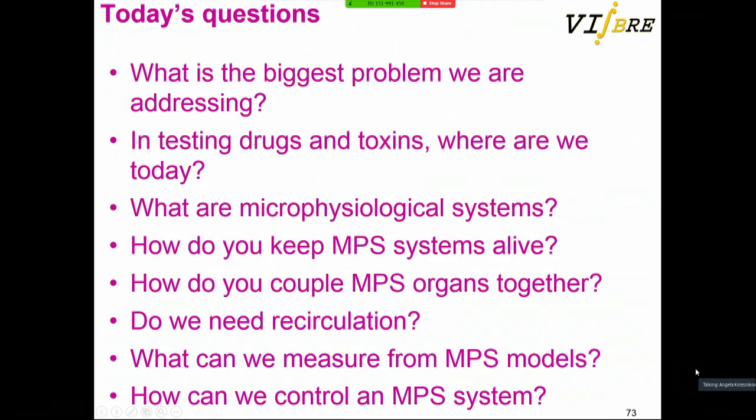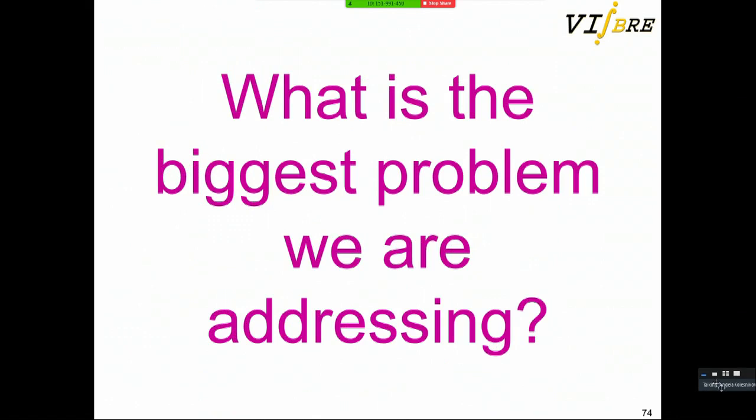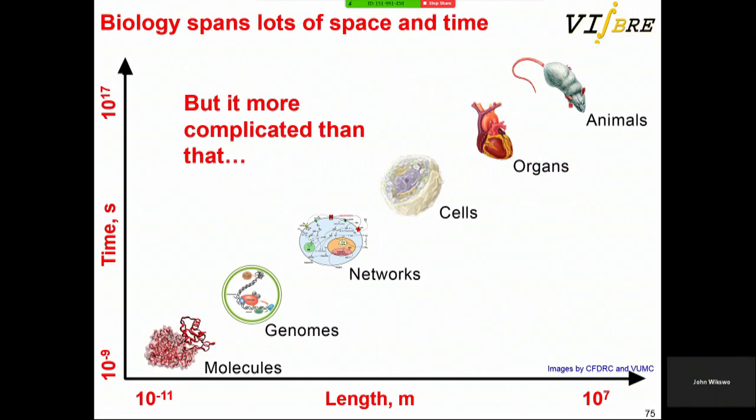Today's talk is going to focus on some questions regarding microphysiological systems. The first is: what are the problems I'm trying to address? Basically, molecules are small and fast, and animals are large and slow, so much of the complexity of biology comes from spanning so much space and time.